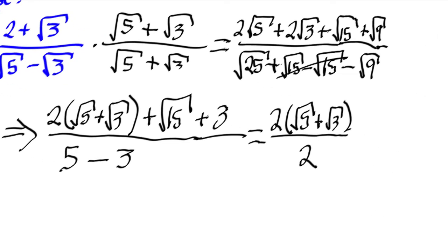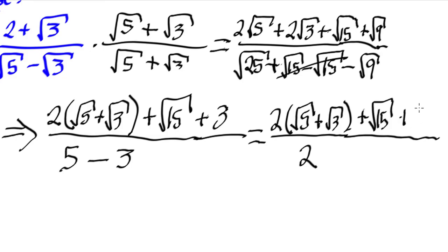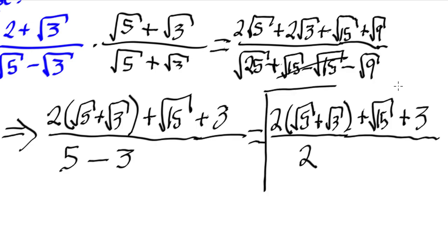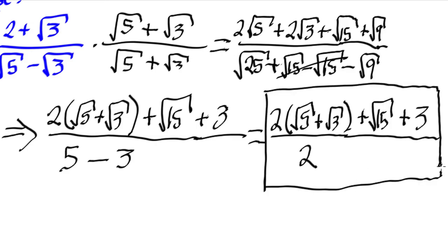Copying the full numerator — plus square root of 15 plus three — over two gives us our final simplified answer. This is the simplified version; we cannot simplify this any further.